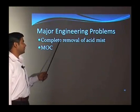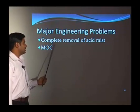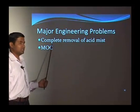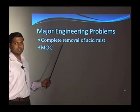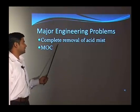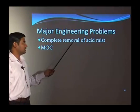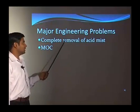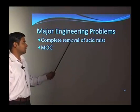The major engineering problems are the complete removal of the acid mist and the material of construction. The material of construction requires rubber-lined or stainless reactor to prevent corrosion due to phosphoric acid. The complete removal of acid mist must be taken care of, as direct addition of water will create the mist during phosphoric acid manufacturing.